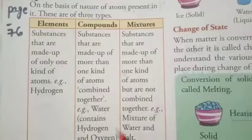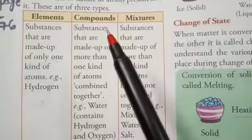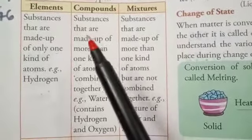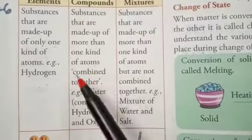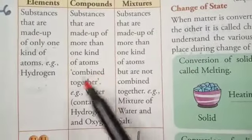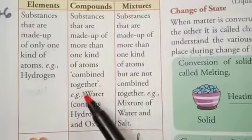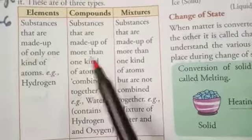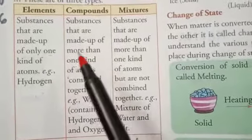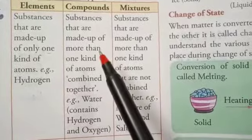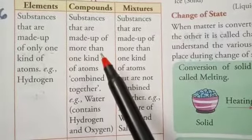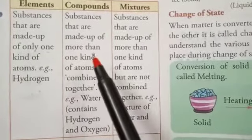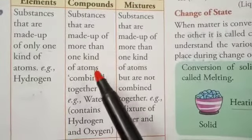Now we will read about compounds. Compounds are substances that are made up of more than one kind of atoms combined together. We call it compounds.